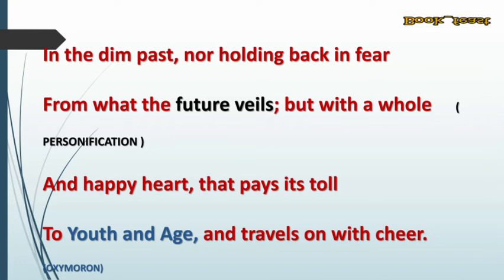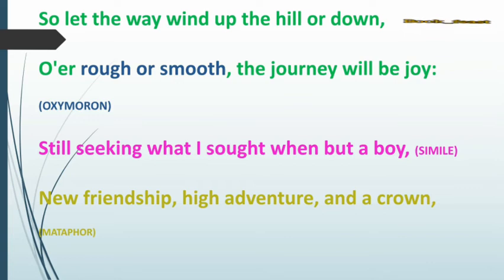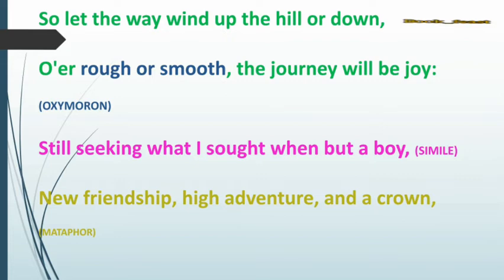'Let the way wind up the hill or down.' Here he compares life to the wind on a hillside, which goes up and comes down. Likewise, his life has its ups and downs, problems and cheerfulness. Let it go — he doesn't care. 'Over rough or smooth, the journey will be joy.' Whether his life's journey is smooth or very rough, he doesn't care — his journey will be joyful. The poet stresses that your happiness depends not on life's circumstances, but on your mindset.